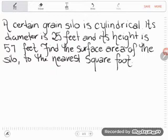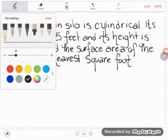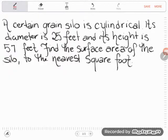Let's take a look. It says a certain grain silo is cylindrical. Its diameter is 25 feet and its height is 57 feet. Find the surface area of the silo to the nearest square foot.